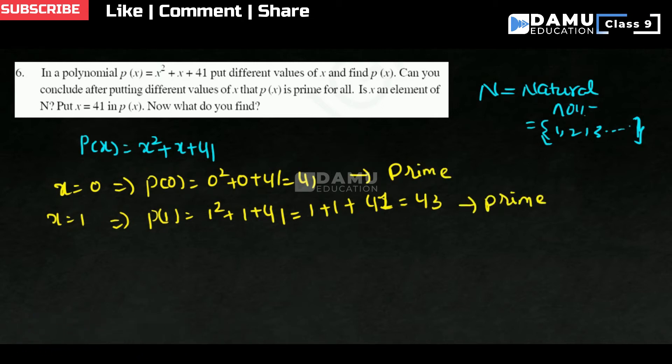Then we are going to check for another number, x equals 2. P(2) will be equal to 2 square plus 2 plus 41. So 2 square is 4 plus 2 plus 41. 4 plus 2 will be 6. 6 plus 41 will be 47. So this is also prime.